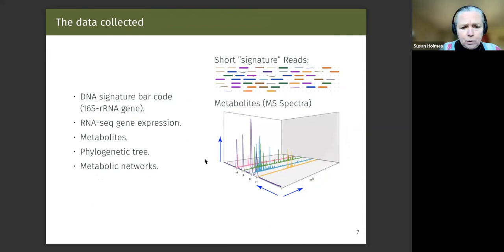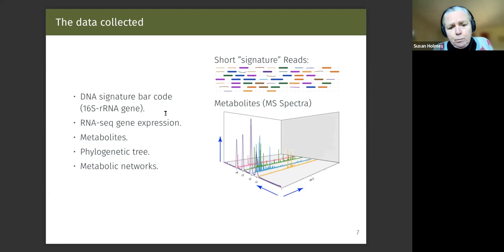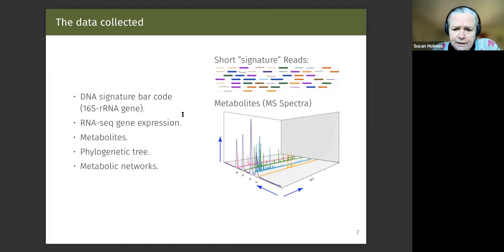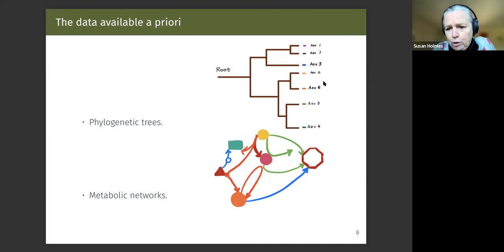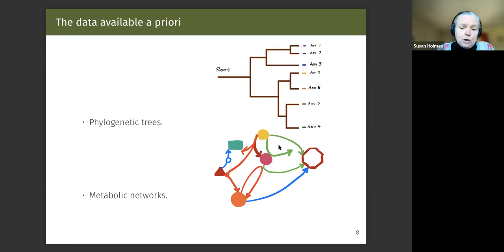We often have RNA-seq or single-cell RNA-seq, but as people interested in microbial ecology, we also use 16S RNA gene DNA signatures to find out metabolites, which we measure. Usually the phylogenetic tree that comes with this data is preordained — we already have the tree and don't have to do tree building, but we do have to incorporate that information. We also have metabolic networks, which are information we have going in. Those kinds of things have to be integrated into the data.